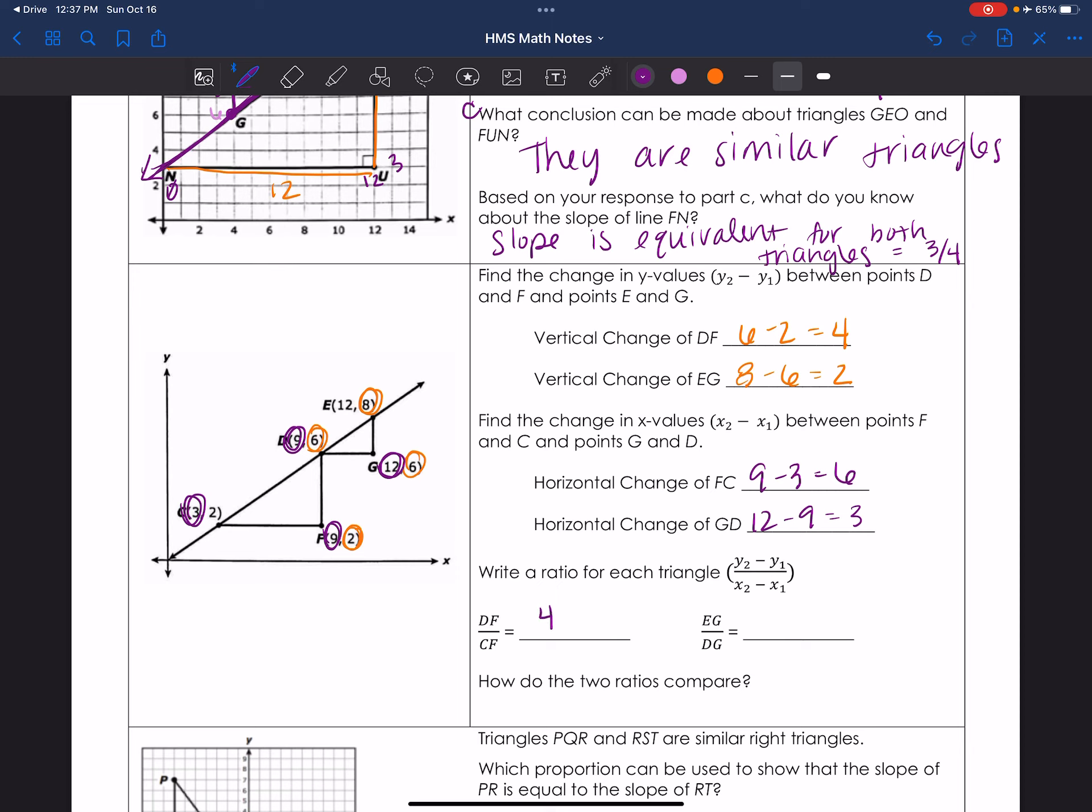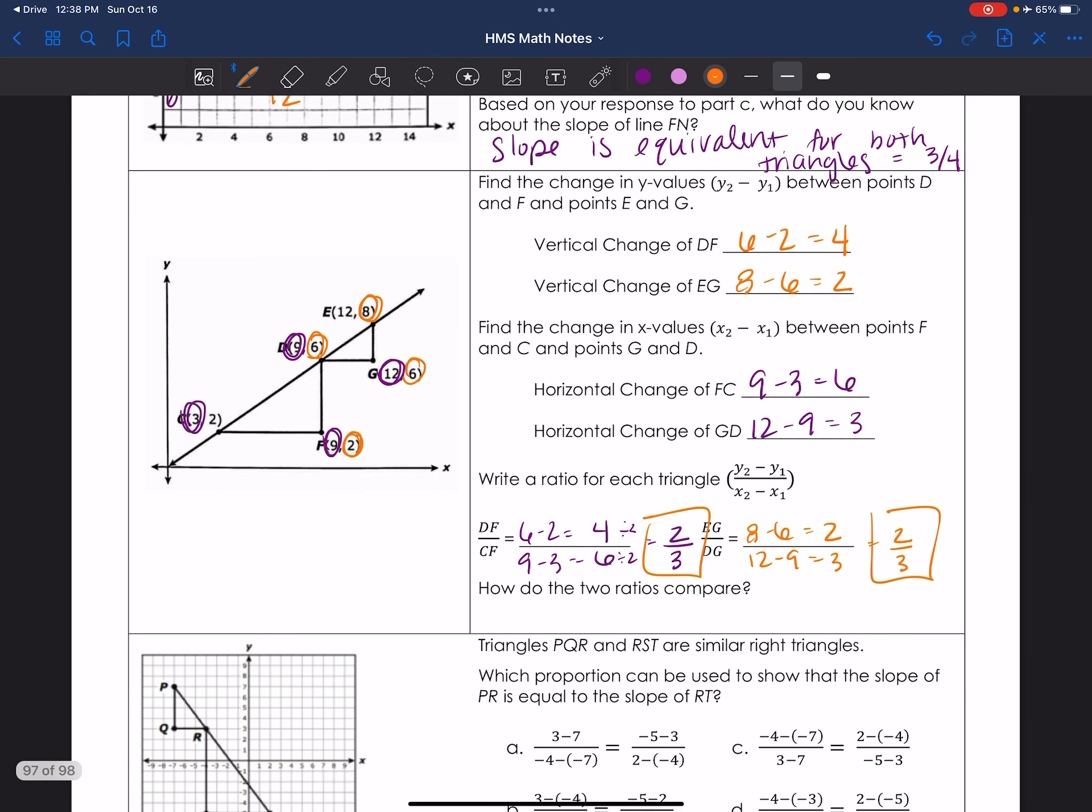So vertical change, DF, 4, over horizontal change, FC, 6. I guess I can actually write it out. This is 6 minus 2, which equals 4. And 9 minus 3, which equals 6. And then I would reduce them both by 2. Cut them in half. That's 2 over 3. So E and G. The vertical change of E and G is 8 minus 6, which equals 2. And G, which is 12 minus 9, which equals 3. And I don't necessarily need to reduce it, because it already is reduced. And hey-oh, look at that. They're on the same line, so they should have the same slope. I feel like that is logical. I feel like that is very sensible. Sensical. It makes sense. How do the ratios compare? They are equivalent, meaning they are similar triangles. Cool. Done and done.